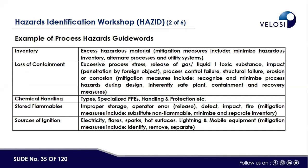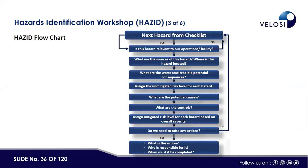Examples of process hazard guide words and their sources include chemical handling, specialized PPE handling, and protection. Stored flammable materials, improper storage, operator error, and defects are sources of impact. Fire mitigation may include substituting non-flammable material, minimizing and separating inventory. Sources of ignition include electricity, flare spark, hot surfaces, lightning, or mobile equipment.